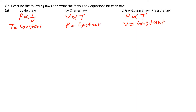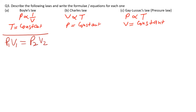The formula for Boyle's Law is P₁V₁ = P₂V₂, and the condition for this formula is that the temperature should be constant.